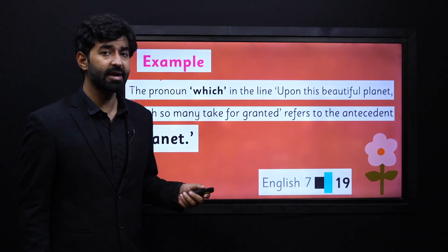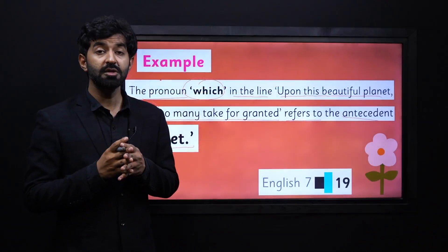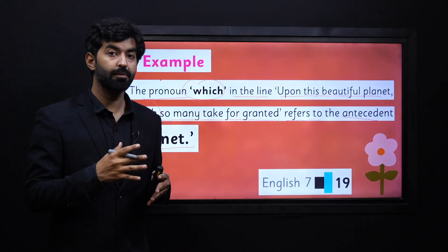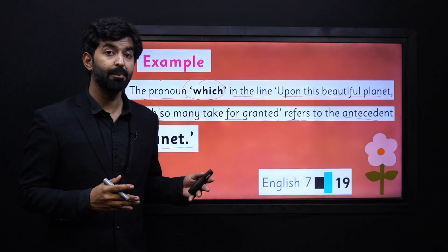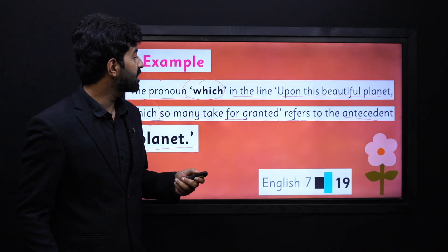Let's look at an example from page 19 of your book. The pronoun 'which' in the line, 'upon this beautiful planet, which so many take for granted' — this pronoun 'which' actually refers to the antecedent 'planet.' My dear learners, this pronoun is referring back to its antecedent. You can read this example and try to understand how this works.